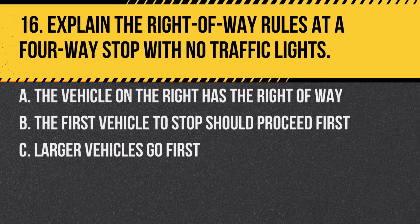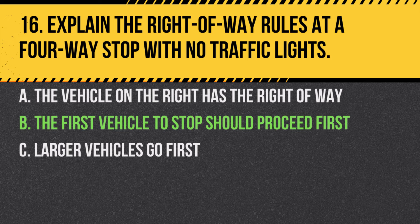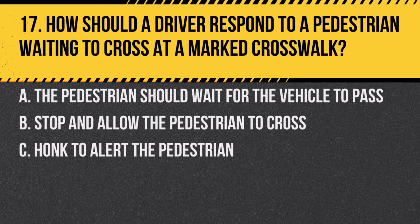Question 16. Explain the right-of-way rules at a four-way stop with no traffic lights. A. The vehicle on the right has the right of way. B. The first vehicle to stop should proceed first. C. Larger vehicles go first. Answer: B. The first vehicle to stop should proceed first. If two vehicles arrive simultaneously, the vehicle on the right goes first.